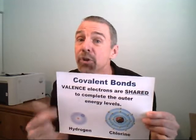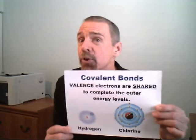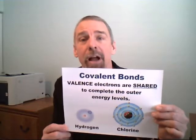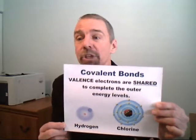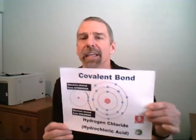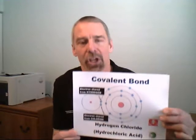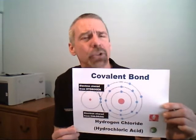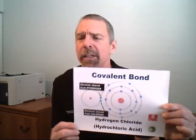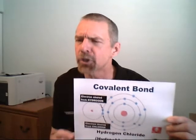So what about those covalent bonds? It's not about loss or gain of electrons. Valence electrons are shared to complete the outer shells of the non-metals. It's when non-metals join to make covalent bonds with shared electrons — not a transfer.